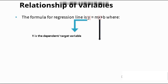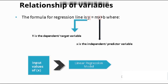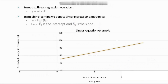X is the independent variable that we use to predict. In math we use the regression equation y = mx + b, whereas in machine learning and statistics we use y = β₀ + β₁x, where β₀ is the intercept and β₁ is the slope.